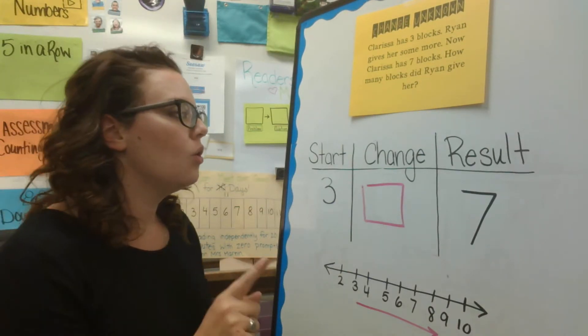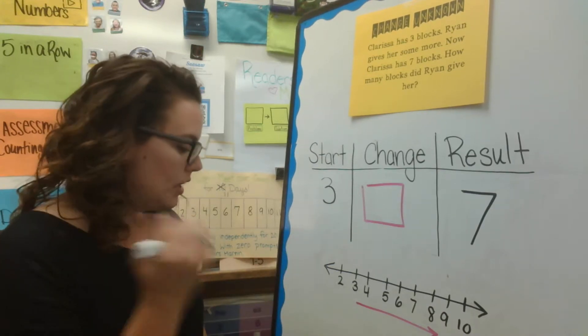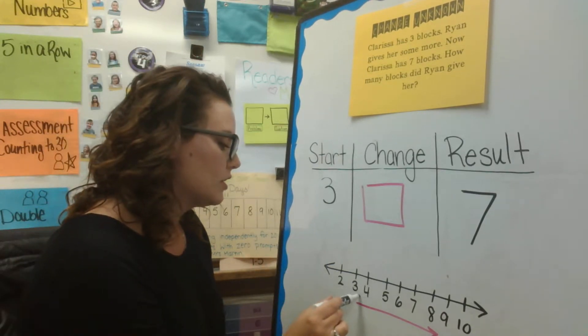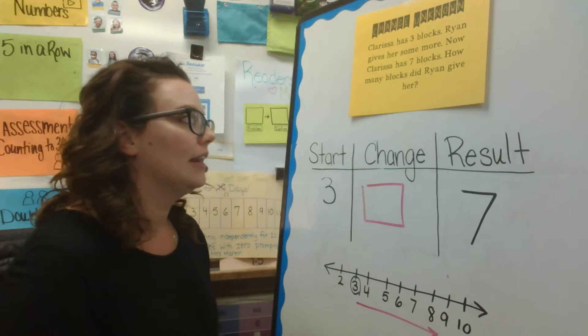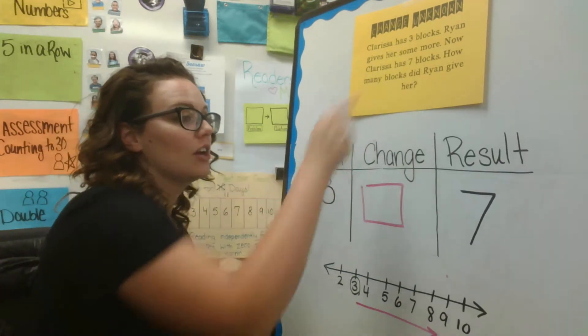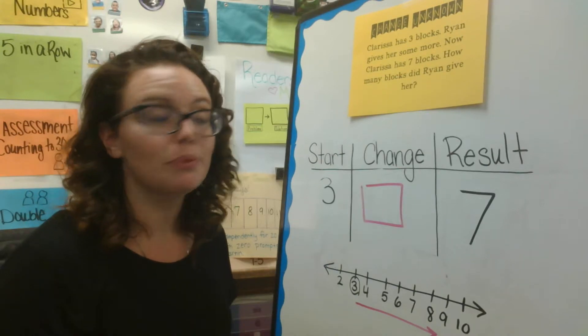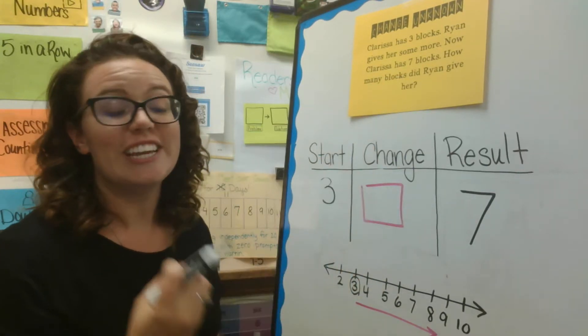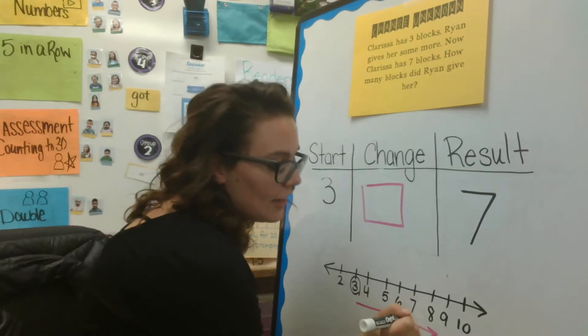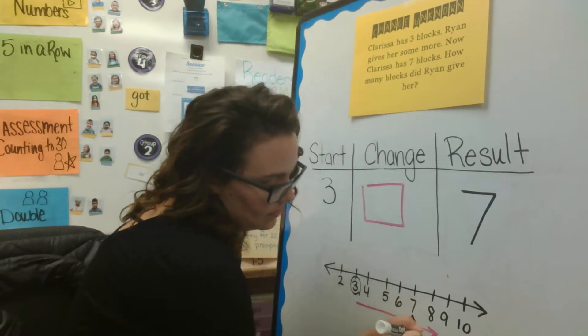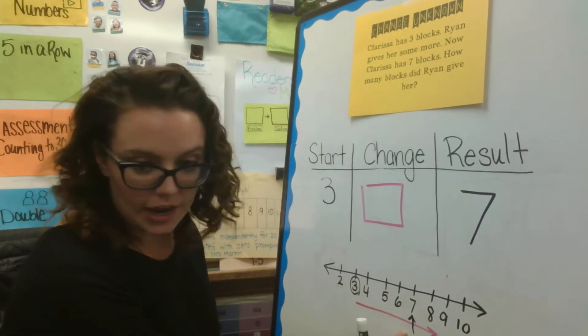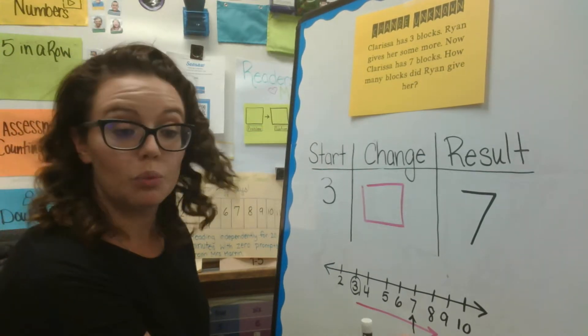Now, we know where to start this time. So, I'm going to circle three on my number line because Clarissa started with three blocks. We don't know how many blocks Ryan gave her. But we know that she ends with a total of seven blocks. So, I'm going to put an arrow under seven to tell me when to stop.